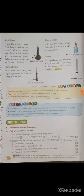Now we will explain the spirit lamp. Spirit lamp is also used for heating purposes. Spirit lamp is made up of glass or steel tank, which contains spirit. It has a neck through which a cotton wick passes. When lighted, the wick soaks up the spirit and it starts burning. Nowadays, we are not using spirit lamp in the laboratory.